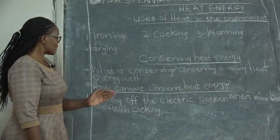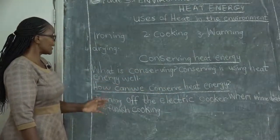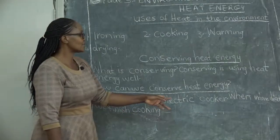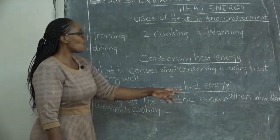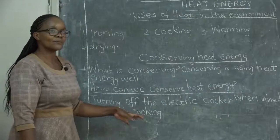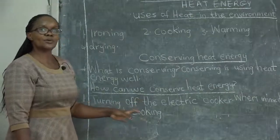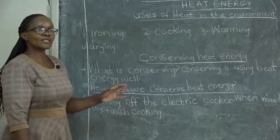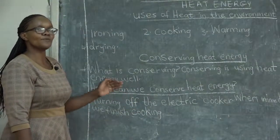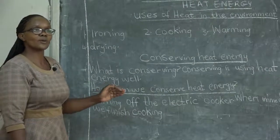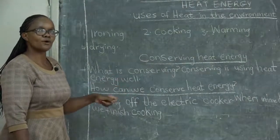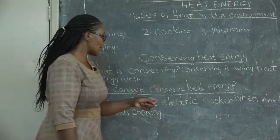We can conserve heat energy by turning off the electric cooker immediately when we finish cooking. You make sure that after cooking, especially when you are removing ugali from the electric cooker, you are supposed to turn it off.